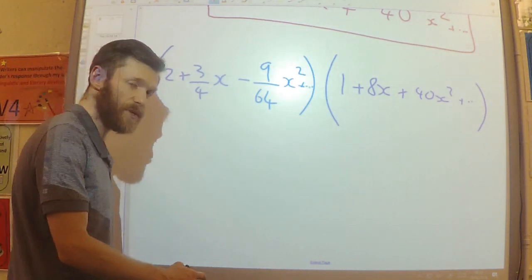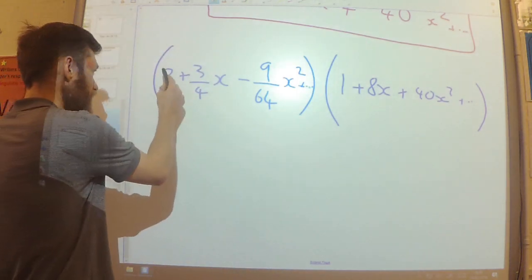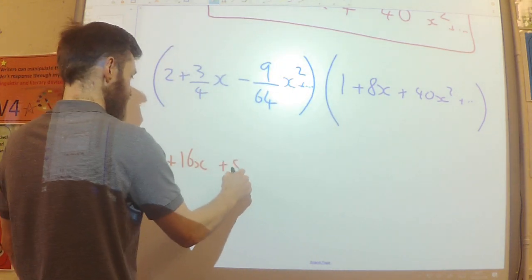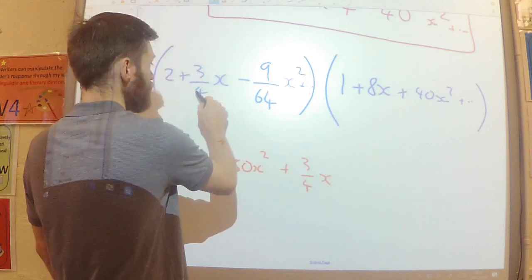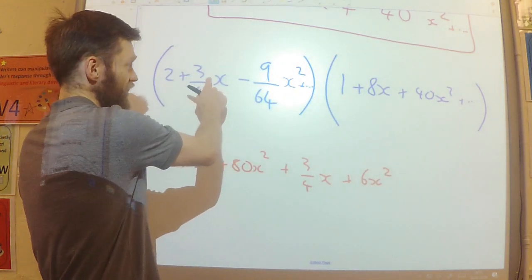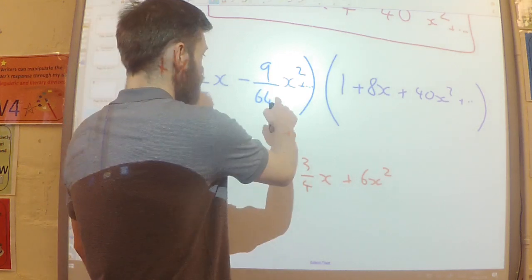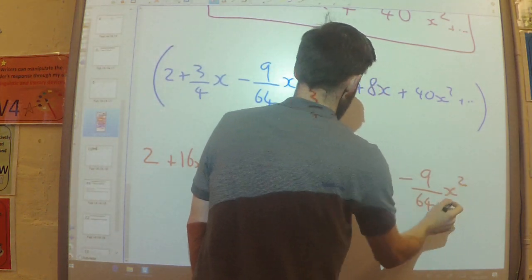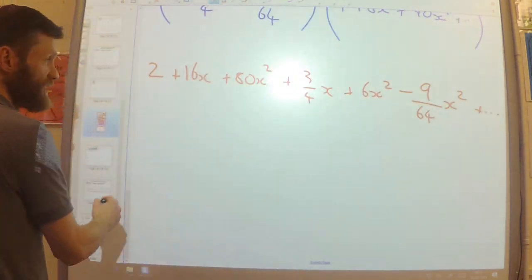So we just need to multiply this up to the x squared term, so I don't need to include anything that's going to have a cubic or a quartic power. So first of all, 2 times the 1 is 2. 2 times the 8x is 16x. 2 times the 40x squared is 80x squared. 3 over 4x times 1 is 3 over 4x. 3 over 4x times 8x is going to be 6x squared. And I don't need to do the 3 over 4x times 40x squared, because that would give me a cubic term, which I don't want. And then finally, the only other one I need to do is the 9 over 64x squared multiplied by 1, which is 9 over 64x squared. All of the other terms would be higher powers than the squared, so I'm not going to worry about those.